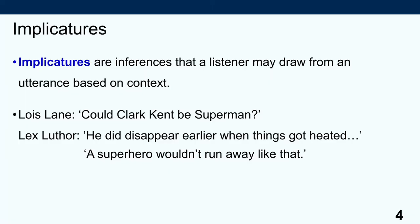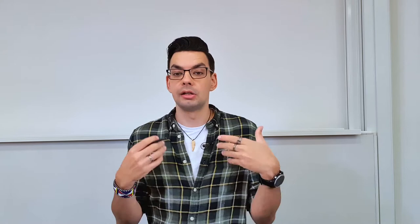A crucial thing about implicatures is that as further context comes in, they can change. He might continue the sentence by saying, 'A superhero wouldn't run away like that,' in which case suddenly you get the opposite inference — that Lex Luthor actually thinks that's not very plausible, because if he was actually Superman, he wouldn't just run off when things get heated; he would use his superpowers and stick it out. So what we saw here is that implicatures can be cancelled, and this is a very crucial property — that's what makes them different from entailments. We draw an implicature, and then something further can be done to convince us that the implicature was wrong.